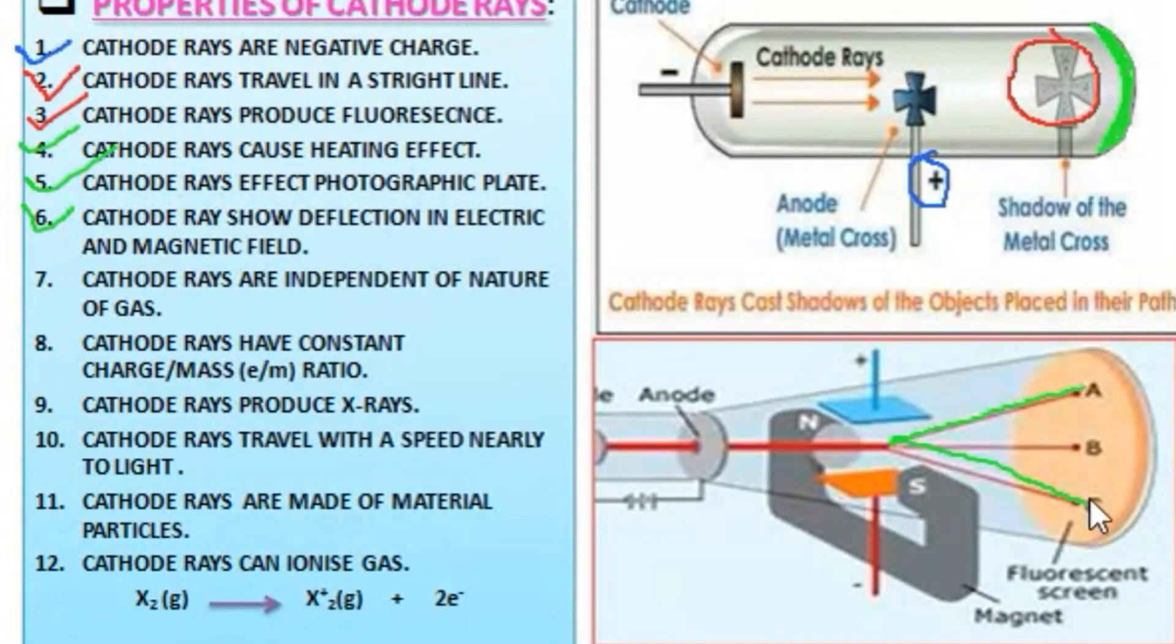The seventh point: cathode rays are independent of the nature of gas. That means the nature of cathode rays is independent of the nature of gas taken in the discharge tube, as cathode rays are made of electrons. We know electrons are the same for all gases.